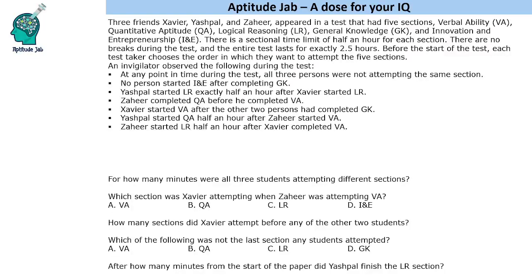Hello everyone, welcome to Aptitude Jab. This set says that there are three friends — Xavier, Yashpal, and Zaheer — who appeared in a test that had five sections. Each section had a time limit of 30 minutes and the paper was two and a half hours. Before the start of the test, each test taker chooses the order in which they want to attempt the five sections, so they can attempt in any order. Some information is given about the order in which they attempted the test.